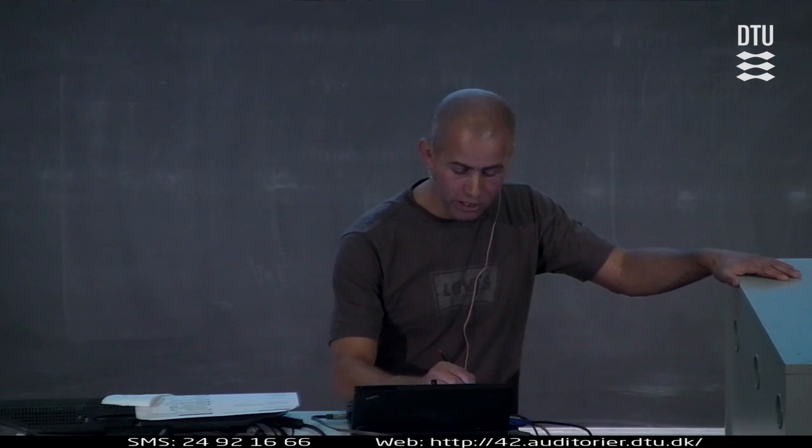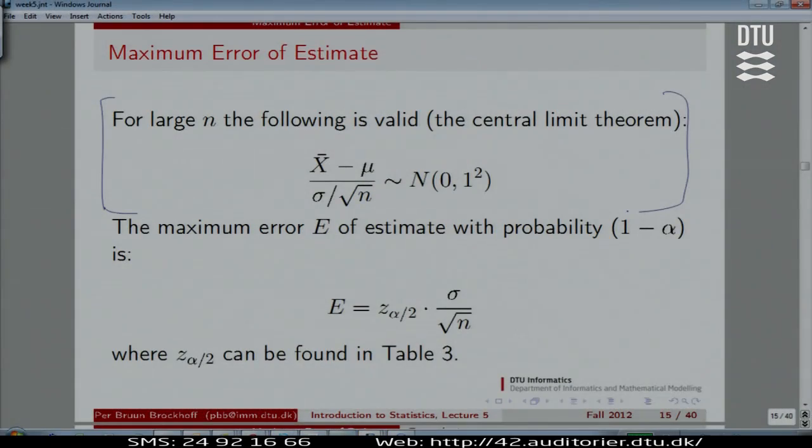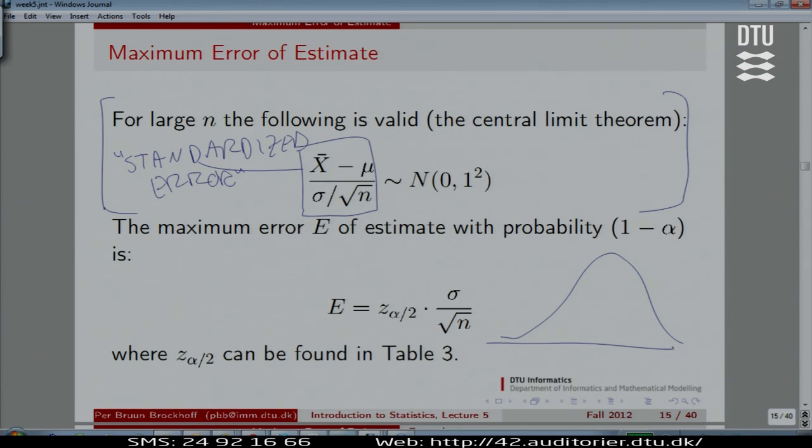First I repeat the central limit theorem as I said before. The idea is you could call this the standardized error. This is the error you make, and it's standardized to have a standard deviation of one. The idea is that when we know this is a normal distribution, we are going to use the normal distribution probabilities to say something about the error, or the maximum possible error. We use the name maximum possible error when we take these percentiles in the standard normal.